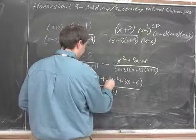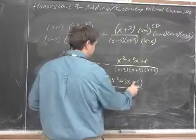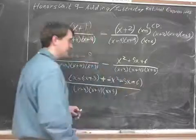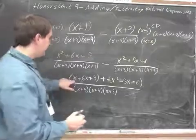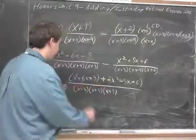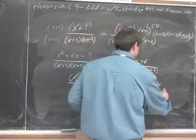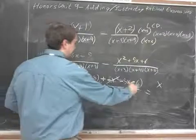It's going to be minus an x squared, minus a 5x, minus a 6. So that gives me x squared minus x squared, well they cancel. 6x minus 5x is x. 5 minus 6 is minus 1.